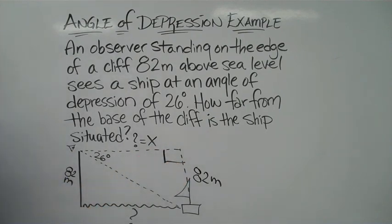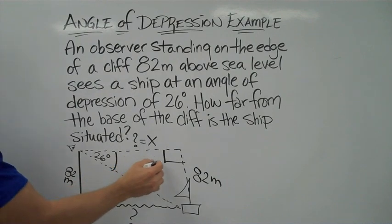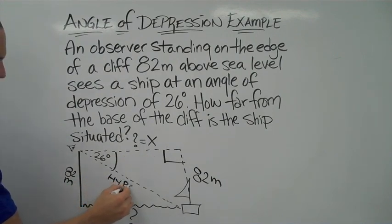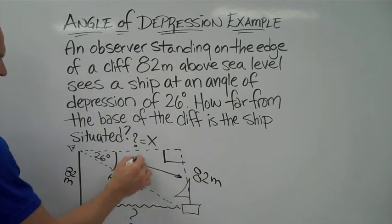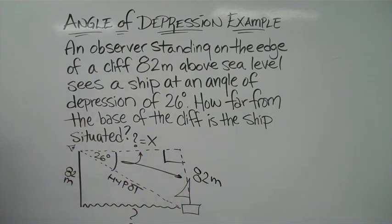Well, this is going to be a right angle, and I know that this angle is here. If that's a right angle, then this is the hypotenuse, this dotted line here. And I've got 82 across and x adjacent.